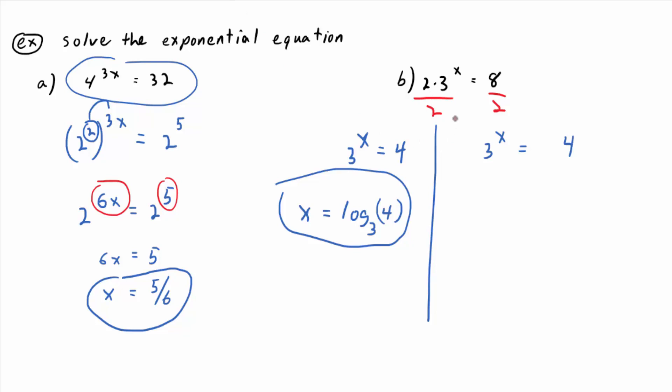So the idea is I can take the log. We usually use base 10 or base e because those are the most common logarithms on your calculators. So I'm going to take log base 10, which means you don't show the base. You just leave it L-O-G. So really what I'm doing is I'm making 3 to the x the input of the log base 10 function. And then I'm making 4 the input of the log base 10 function. I'm inserting both sides into the common logarithm function.